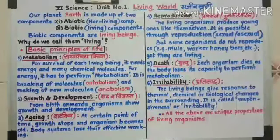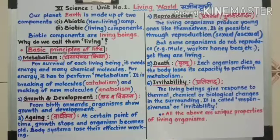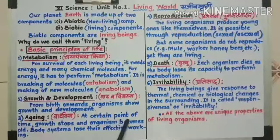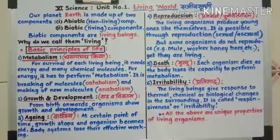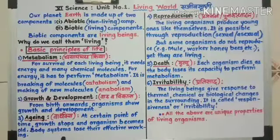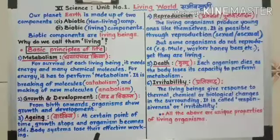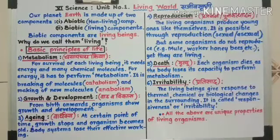As organisms age, their growth stops and the body systems lose their effective working. At a certain point in time, growth stops, and the organism becomes old. Body systems lose their capacity to function effectively, and eventually the organism dies. This is called aging.